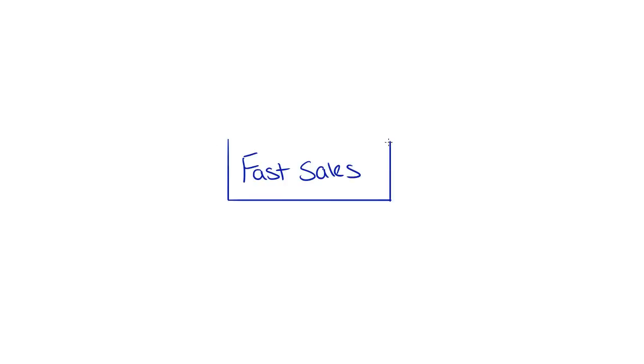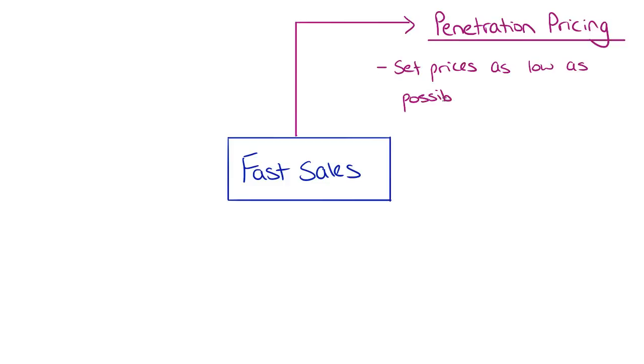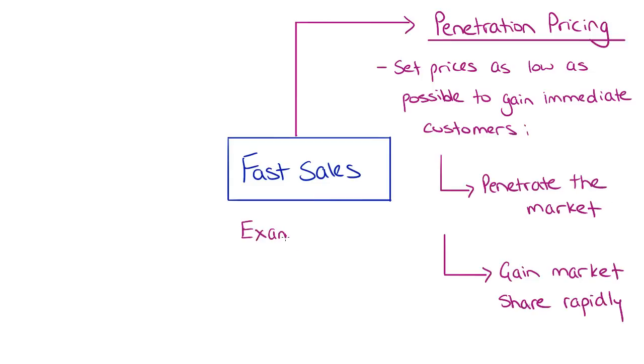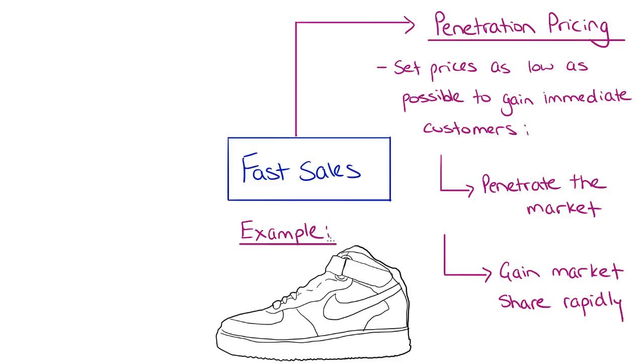Now let's look at some strategies to generate fast sales. Firstly, penetration pricing, which involves setting prices at the lowest possible price to gain an immediate group of customers. It's also used to penetrate a market and gain market share rapidly. For example, let's say I just launched a new brand of sport shoes, so to generate some sales, get my name out there and rapidly increase market share, I'll set my prices as low as possible.